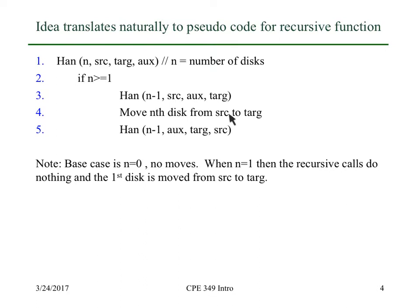Notice, unlike lots of recursive programs, there's not an obvious base case here, but the base case is actually n equals zero. Because if you pass in zero, then basically it does nothing — there are no moves. When n is equal to one, you call it with the first parameter equal to zero so nothing happens, you move the first disk from source to target, and then nothing happens again. So the base case is just hidden in this one set of instructions.